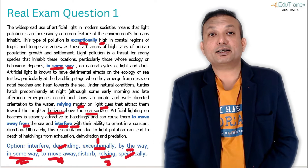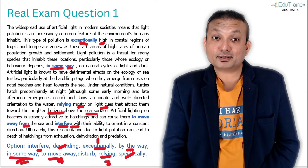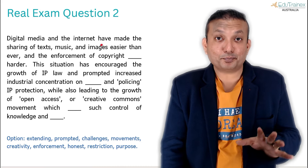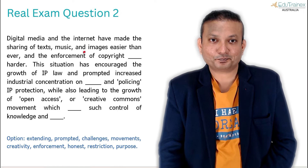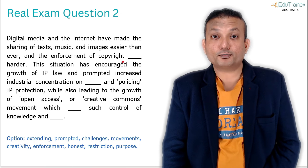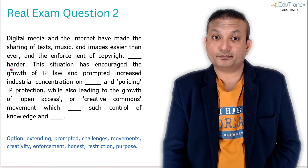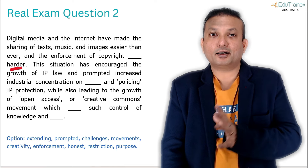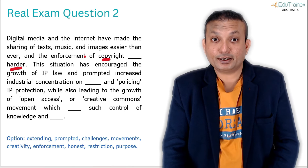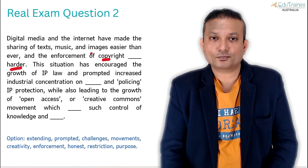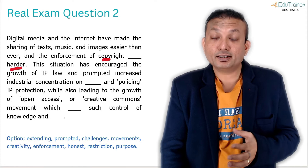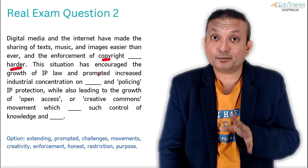This is a smaller passage. 'Digital media and the internet have made the sharing of texts, music, and images easier than ever and the enforcement of copyright dash harder.' 'Harder' — hard, harder, hardest — these are adjectives. So what word fills the blank before 'harder'? We're talking about copyright enforcement becoming harder, so we're trying to restrict something. 'Restriction' is a noun, and adjectives come before nouns — that's the pattern.